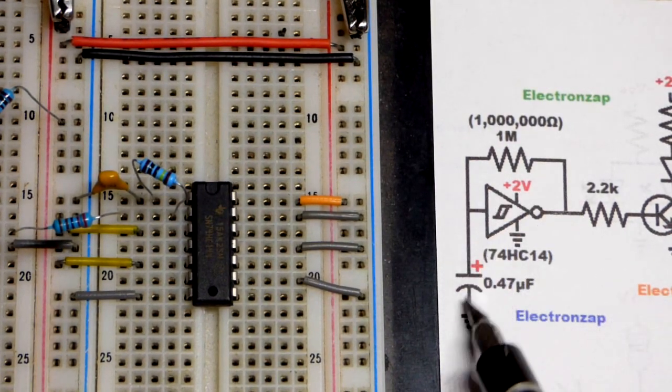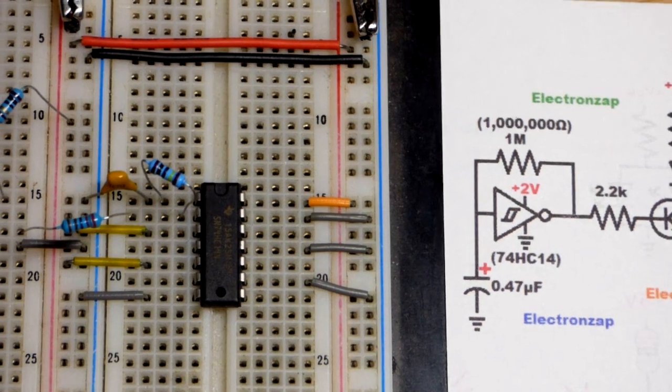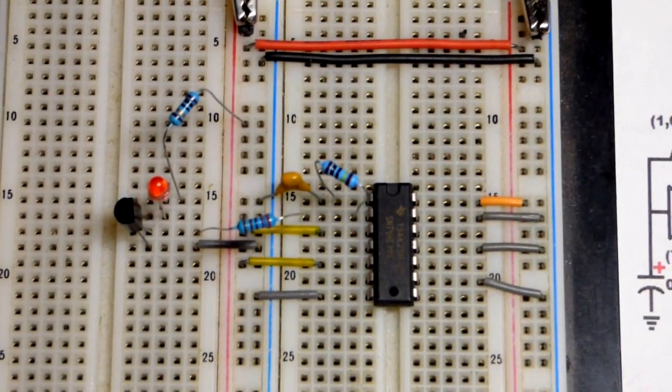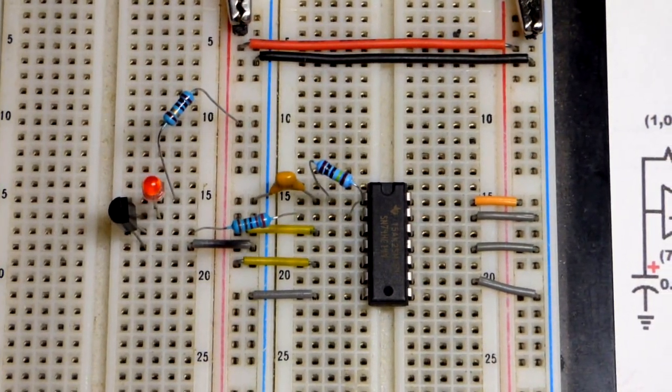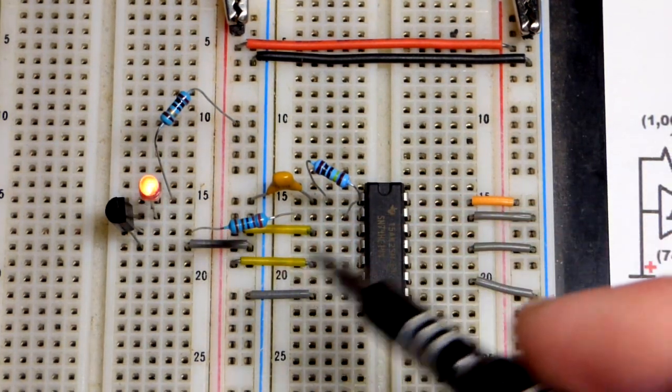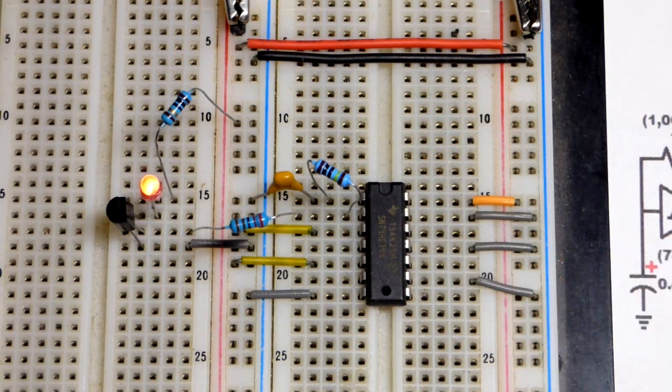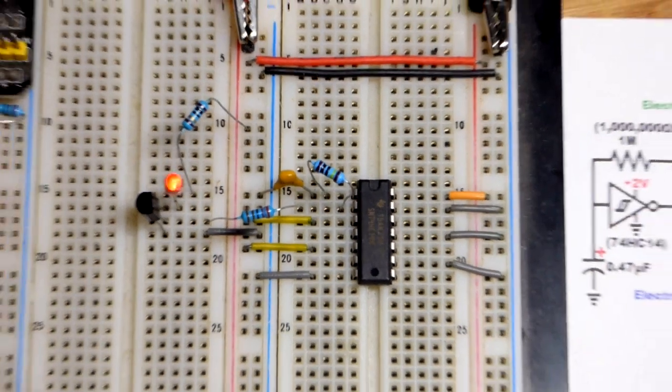And for the timing, 1 million ohm resistor. Because we're only working with 0.47 microfarad capacitor there. It's charging pretty quickly. Even with that high value resistor setting the timing. You can see the LED on there. There's the output. There's the input of that NOT gate.